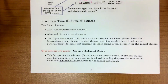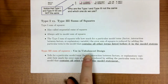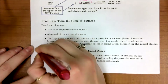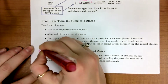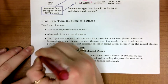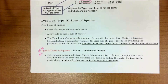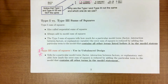Type three sums of squares — the one we want to use for unbalanced designs — tells us for a particular term how much the sums of squared error is reduced by adding that term to a model that contains all other terms in the model statement.